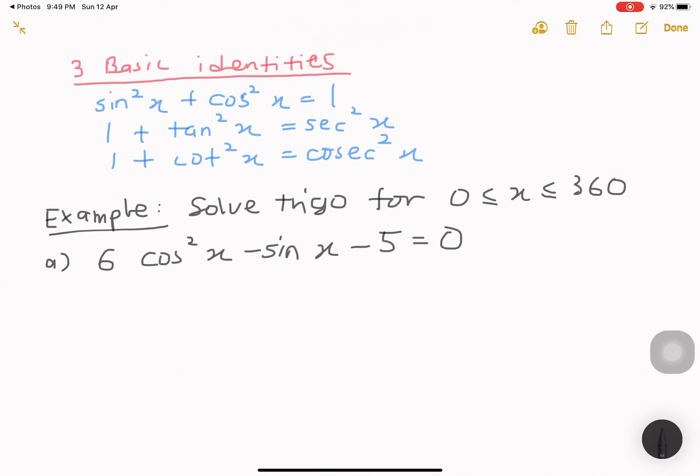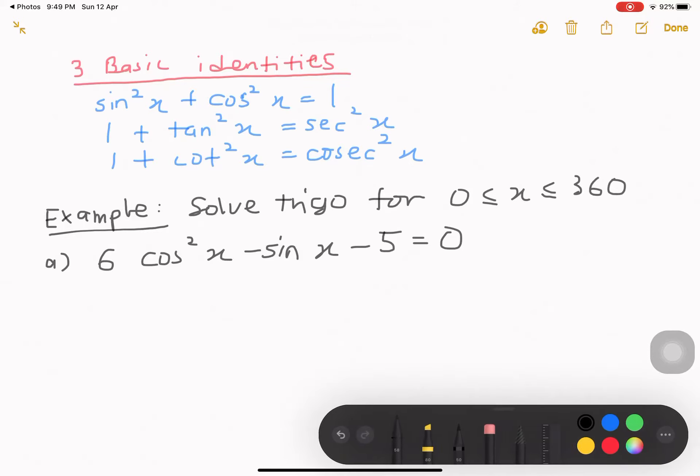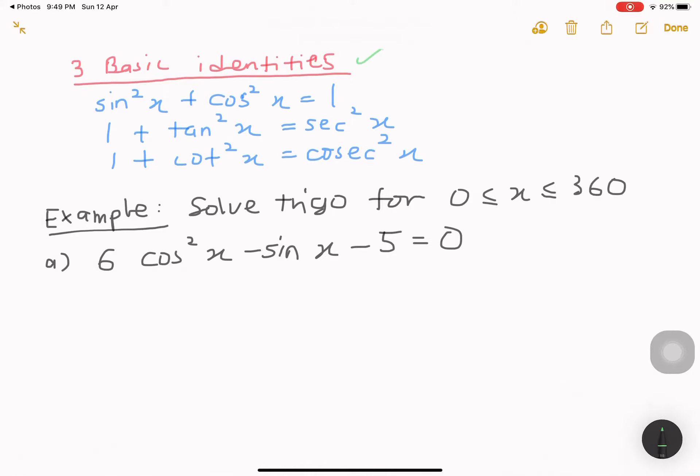Okay, Assalamualaikum warahmatullahi wabarakatuh. So, I just go straight to the point. We already learned how to do solving trigonometric equation before this. So, I asked you to study on 3 basic identities. So, here you go. These are the 3 basic identities.